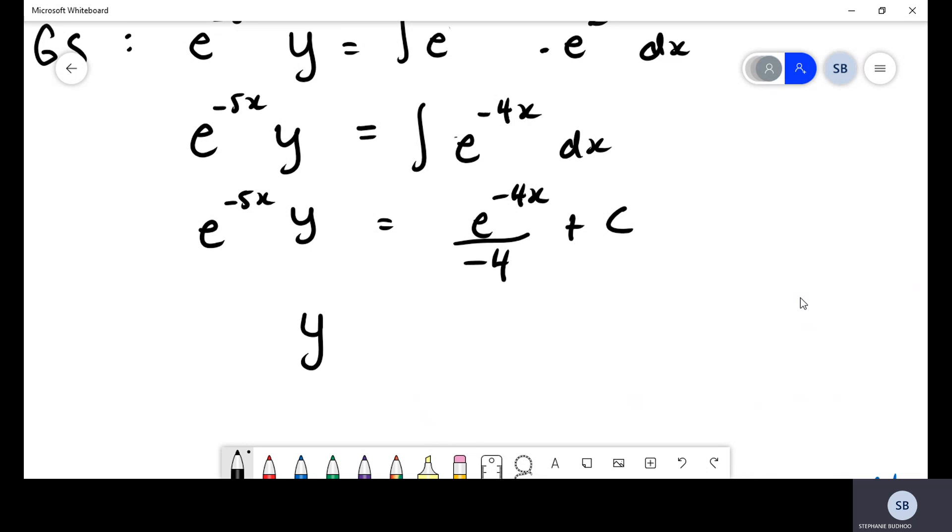Finally, we have one last step to do and we need to isolate our solution such that we have y. We can multiply both sides by e^(5x), and that will give us y = e^x/(-4) + Ce^(5x). That's our general solution for this first order differential equation.